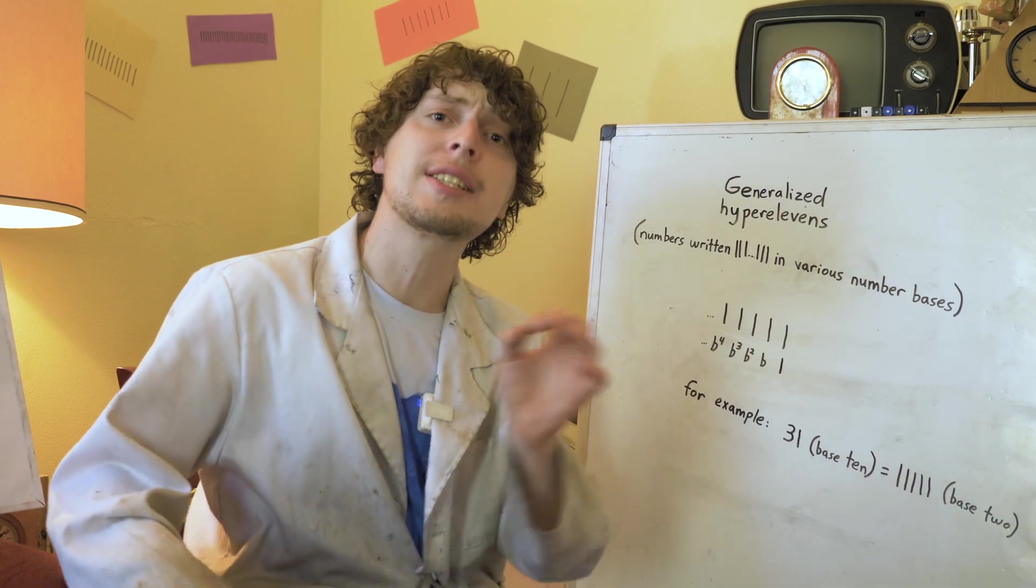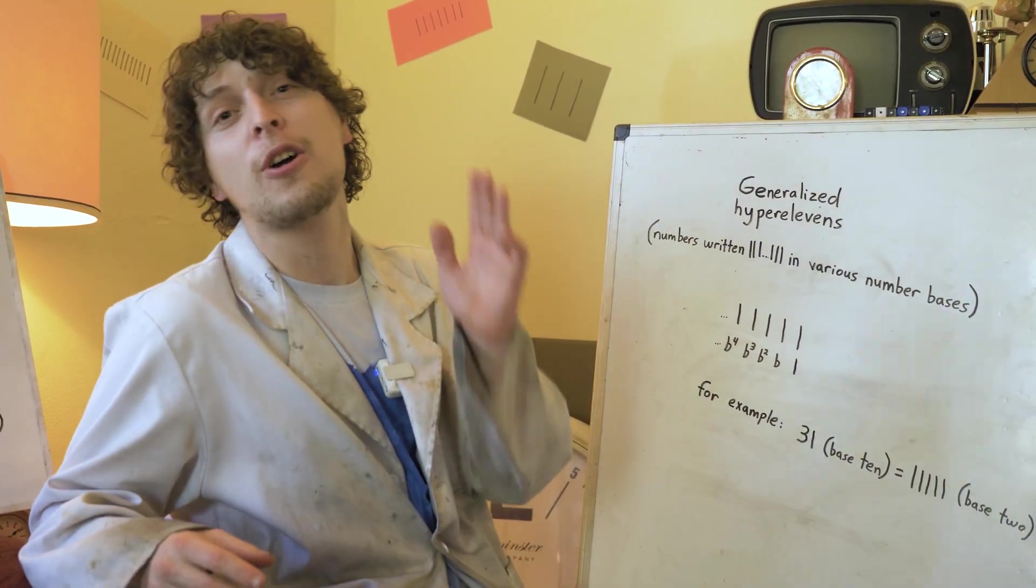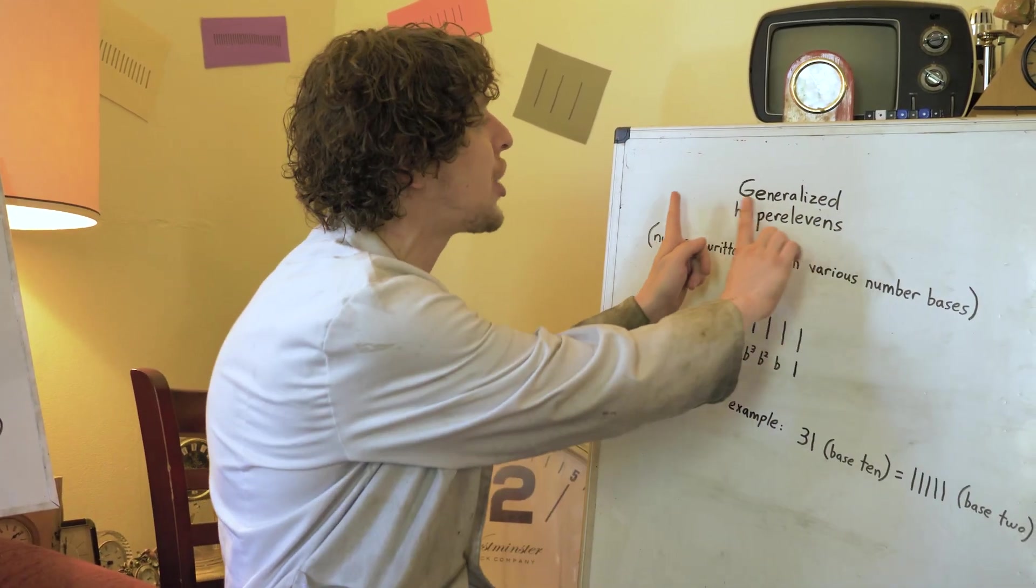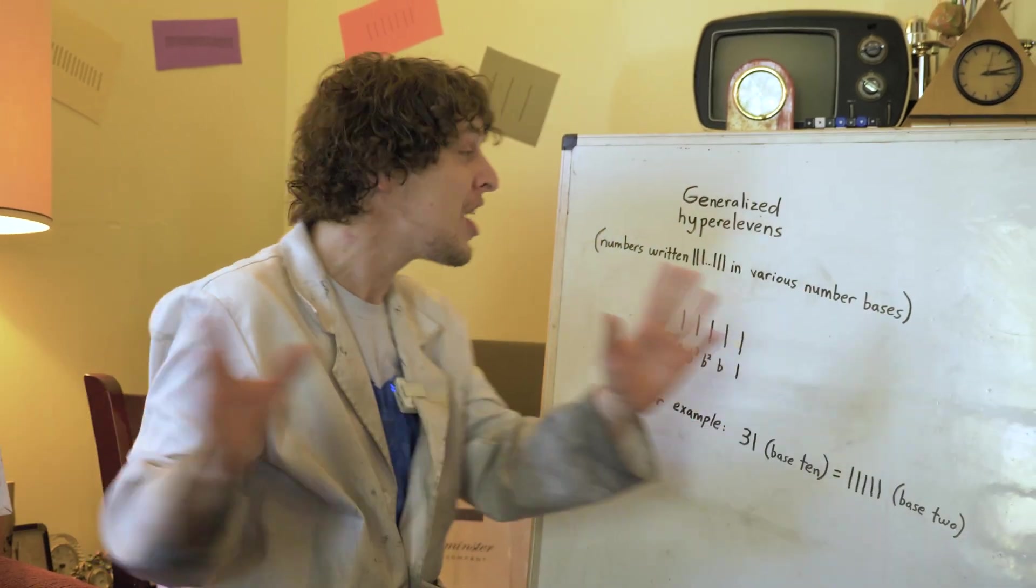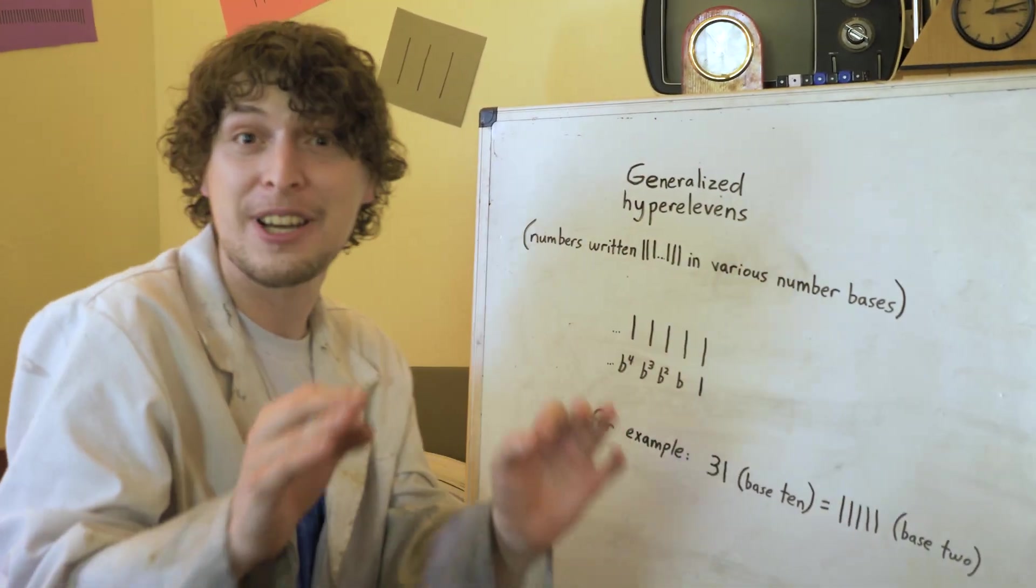Now, although we've only discovered six numbers that we've proven are primes and hyper 11s in our base 10 system, we haven't hit a brick wall because we can now investigate generalized hyper 11s, numbers that are written as just a string of ones in different number bases.